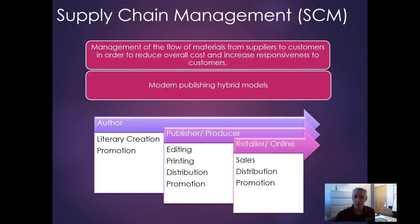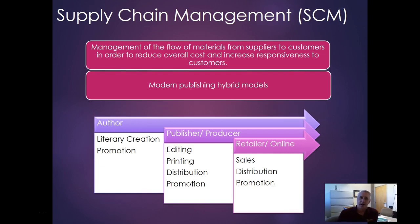Supply chain management — we'll have a whole chapter on this — is essentially the flow of materials from suppliers through your organization, through either the manufacturing or service transformation process to the customers. It's really heavy in manufacturing and can be in service organizations depending on the type. The goal is to reduce overall costs, increase responsiveness to customers, and make sure you have materials where you need them when you need them. The textbook example of publishing is a bit antiquated, so here's a newer one.